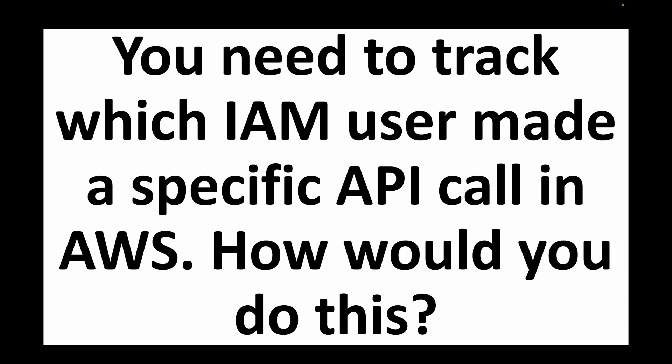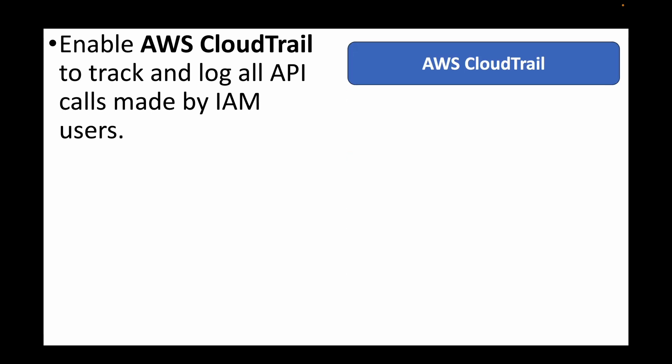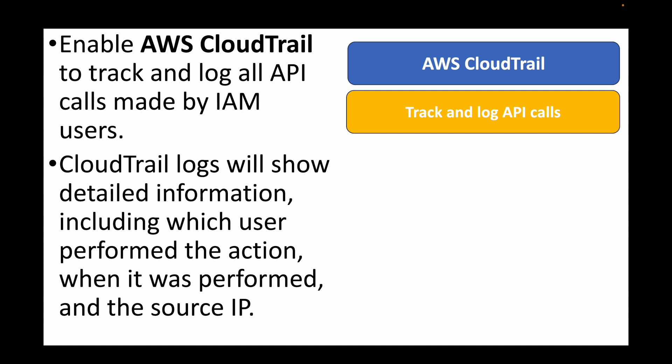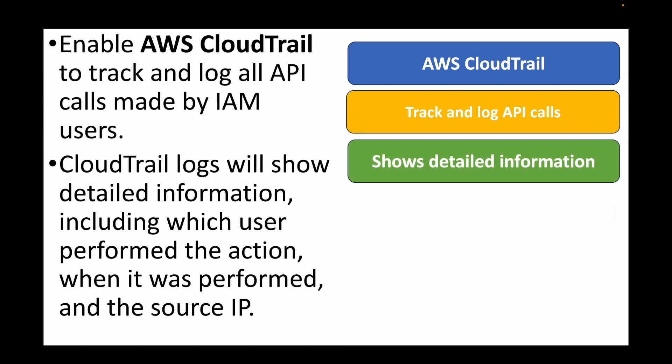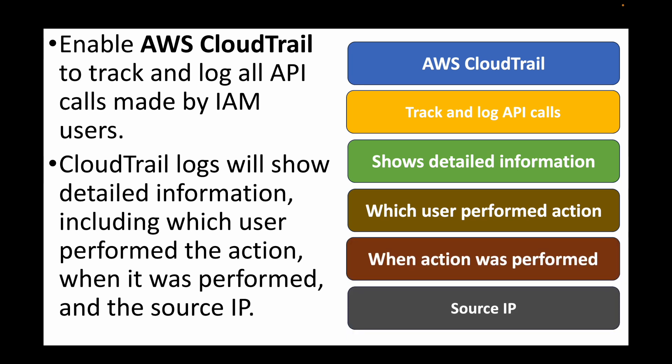The next question is: you need to track which IAM user made a specific API call in AWS — how would you do this? When we talk about auditing in AWS, we can use CloudTrail. This service tracks and logs all API calls made by any resources, services, or IAM users. CloudTrail logs show complete information: which user performed the action, when the action was performed, and where — for example, whether a bucket was created or deleted and when.